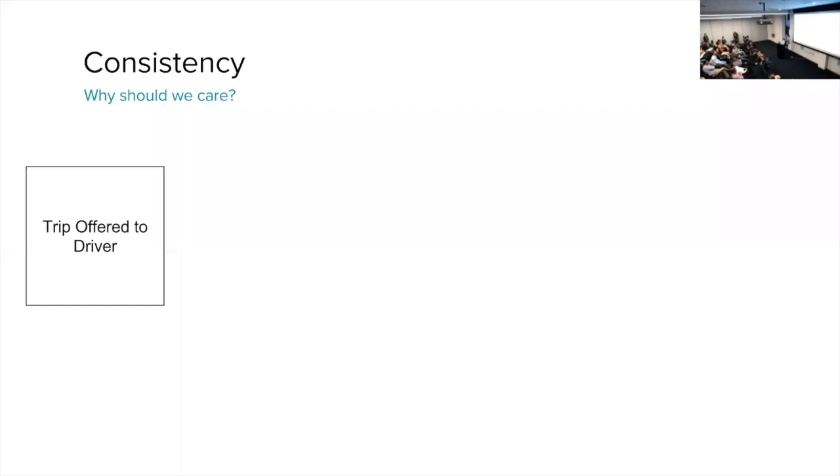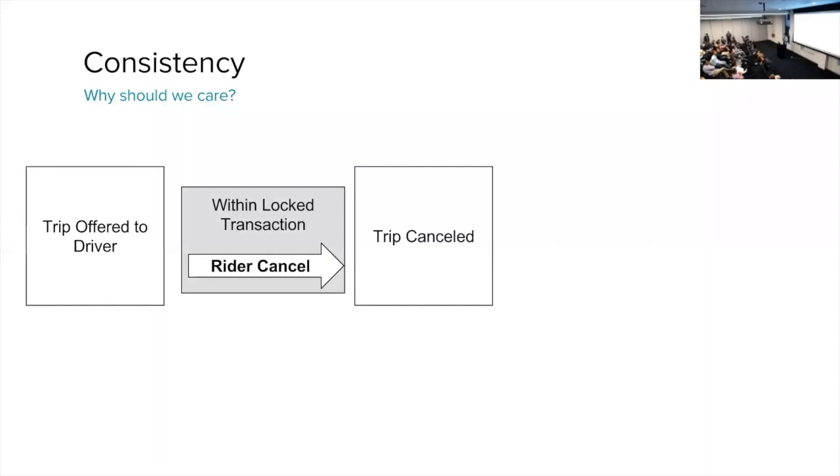When a rider cancel comes in, we acquire a lock on this transaction, which forces the driver accept transaction to wait for a lock on that entity. During this time, we'll process the rider cancel request and determine the trip state to be canceled. After this has occurred, we will release the lock, and then the lock will be acquired on the other transaction, the driver accept transaction, and then we will process that transaction.